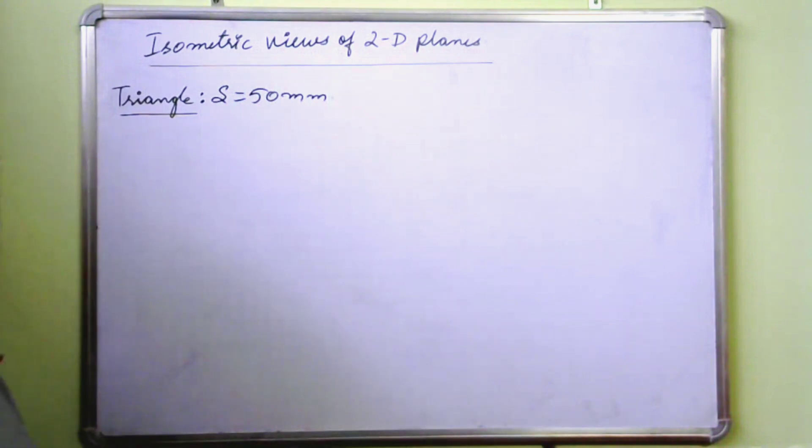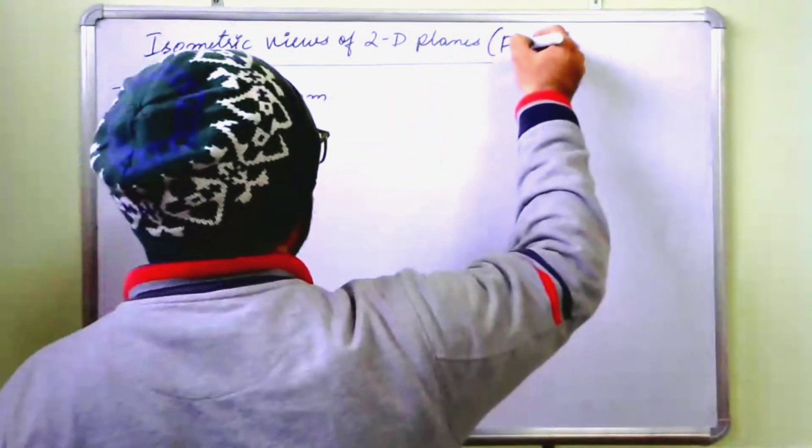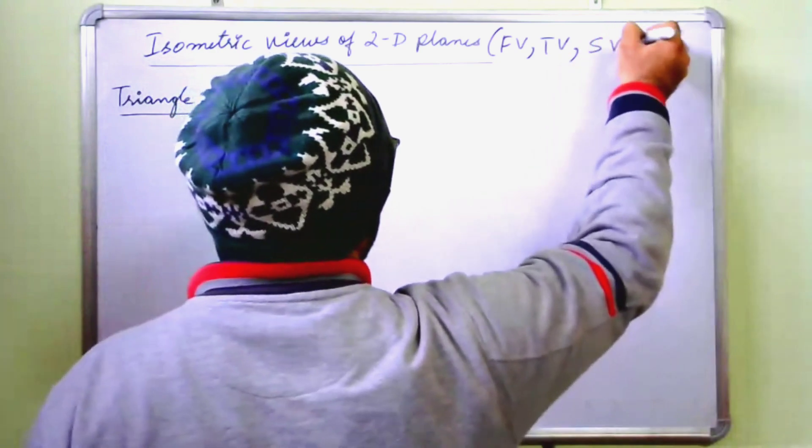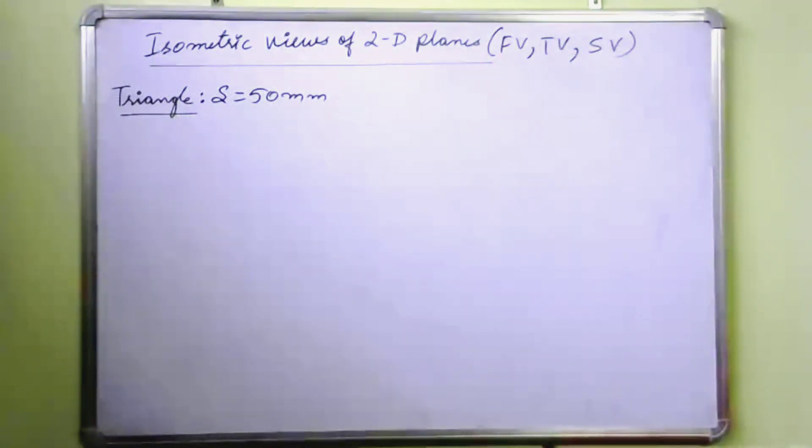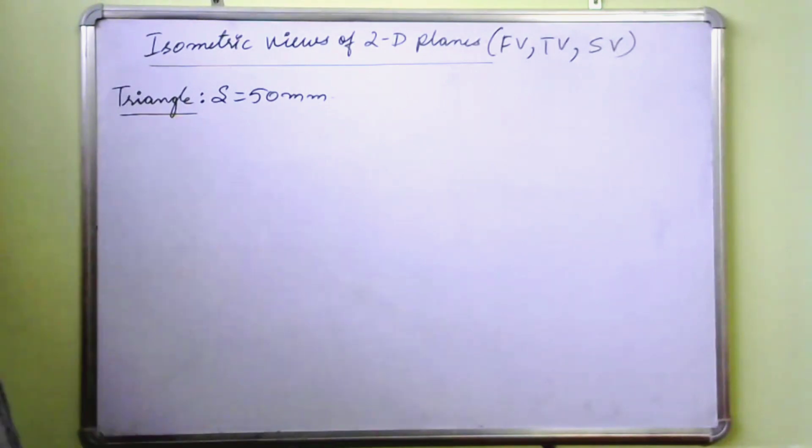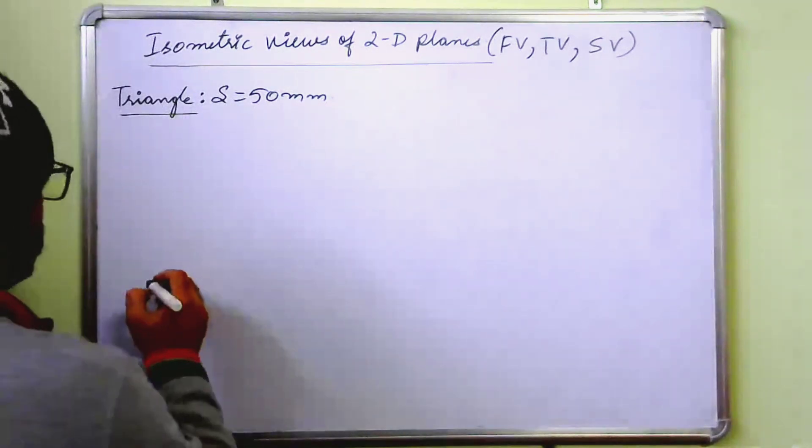So first of all, isometric views means isometric front view, top view and side view. What is the method of drawing this? First of all, you will draw the actual shape of the triangle and then go for drawing the isometric front view, top and side view. Just see how we will be drawing this.